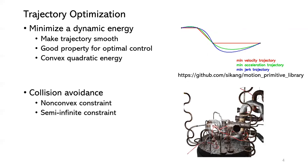However, trajectory optimization also needs to deal with collision, and collision avoidance is a non-convex constraint. As the bottom figure shows, the trajectory is inside a very complex pipe environment and it may have collision at many points — we need to handle them carefully. We need to satisfy the no-collision constraint at each point of the trajectory, so it's also a semi-infinite constraint.